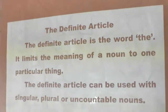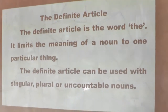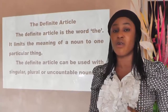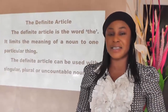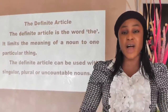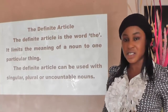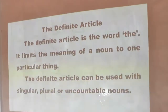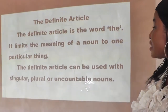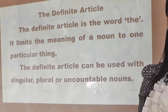The definite article is the word 'the.' It limits the meaning of a noun to one particular thing. When you're talking about a specific thing, you use the article 'the.' The definite article 'the' can be used with singular, plural, countable, and uncountable nouns.